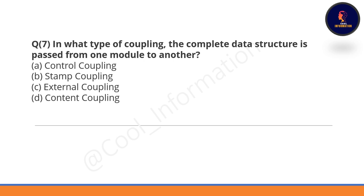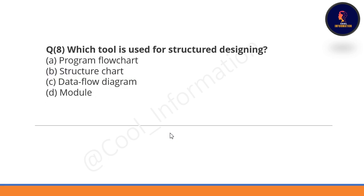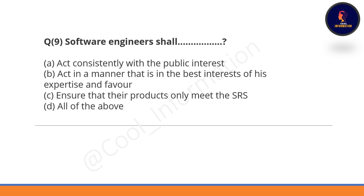Question 7: In what type of coupling is the complete data structure passed from one module to another? It is stamp coupling — Option B is correct. Question 8: Which tool is used for structure designing? It is a structure chart — Option B is correct. A structure chart is used for structure design.